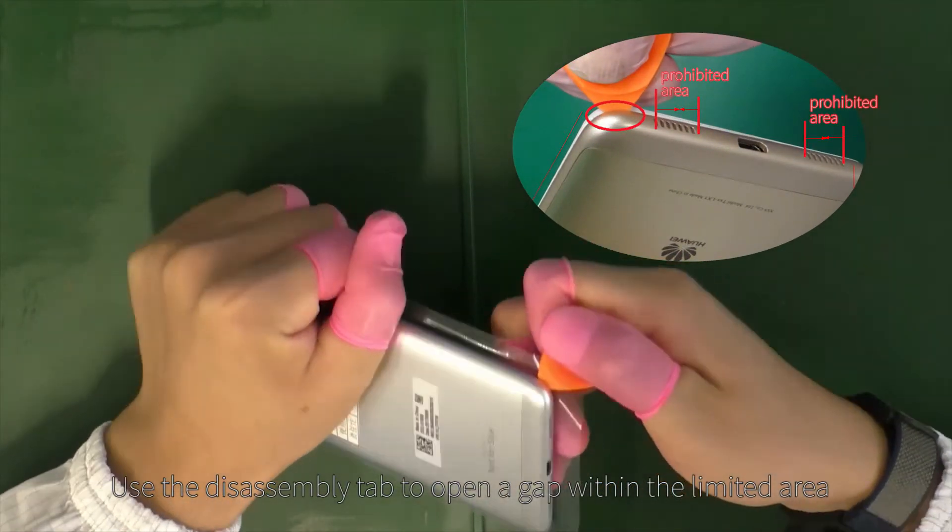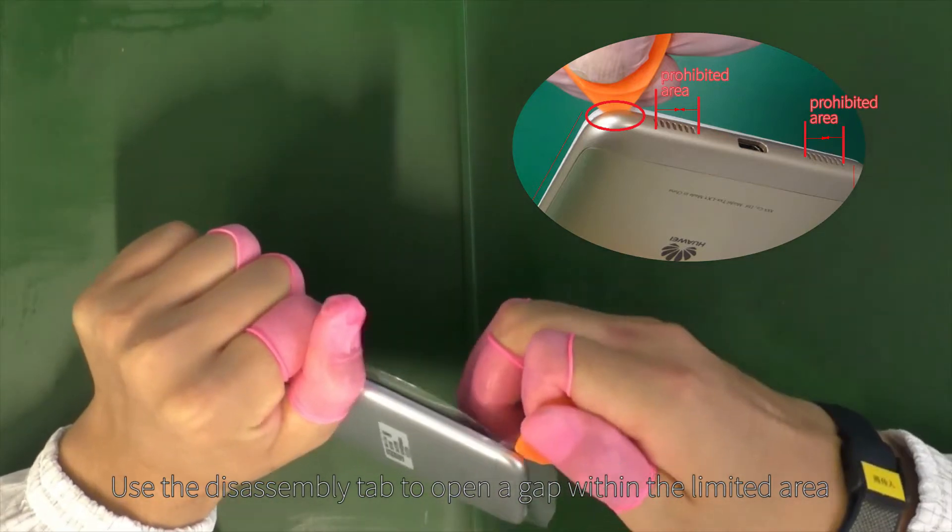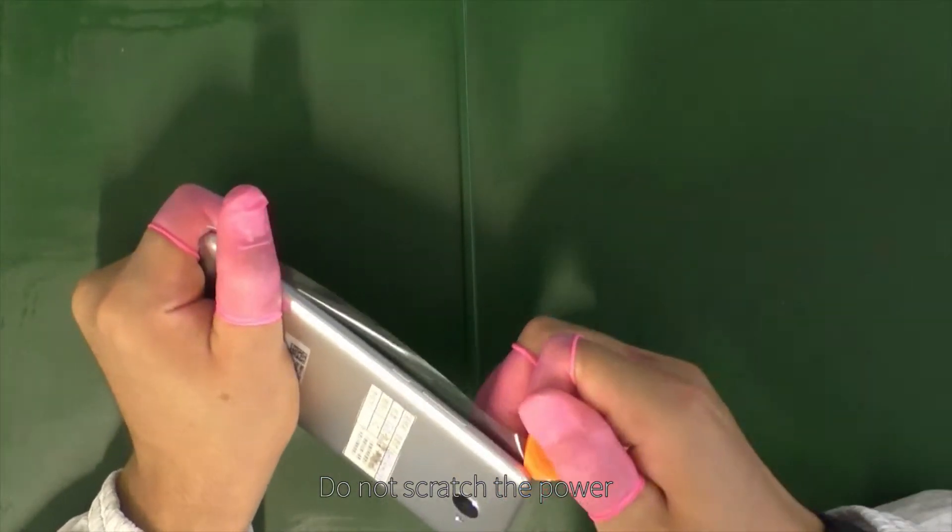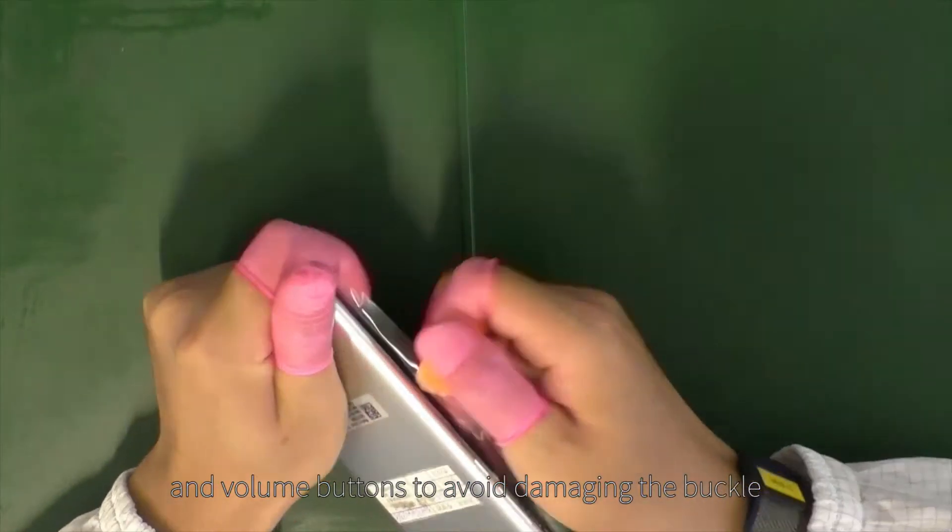Use the disassembly tab to open a gap within the limited area between the front and rear covers. Do not scratch the power and volume buttons to avoid damaging the buckle.